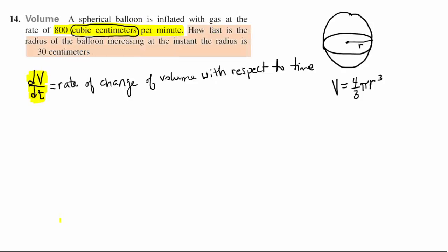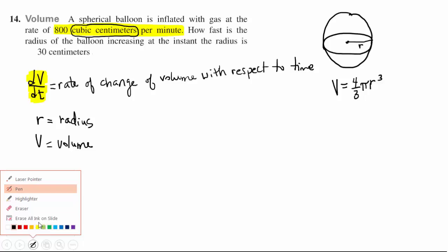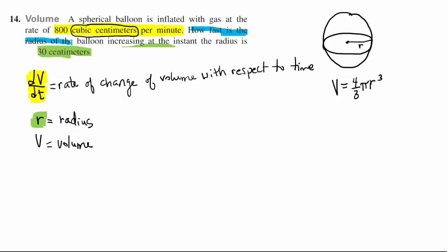How fast is the radius of the balloon increasing at the instant the radius is 30 centimeters? They're giving us some information about r. 30 centimeters is referring to r at one particular moment in time. What are they asking us to find? How fast is the radius increasing? dr/dt in this problem.